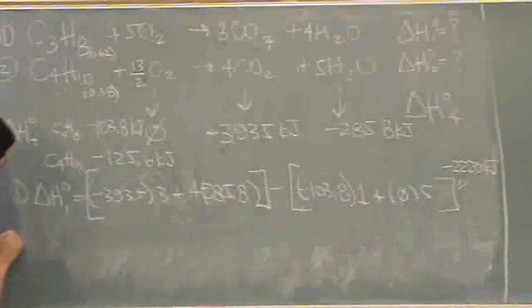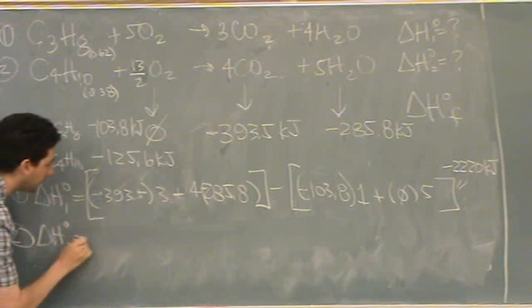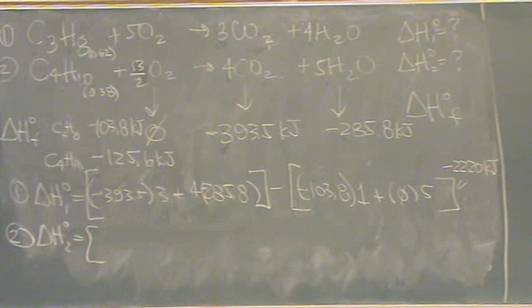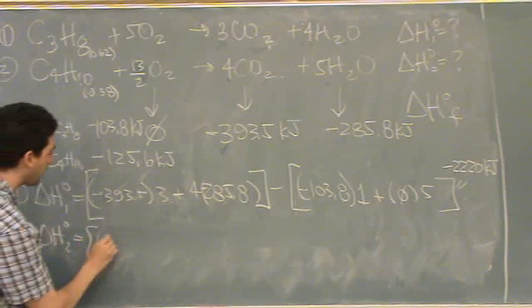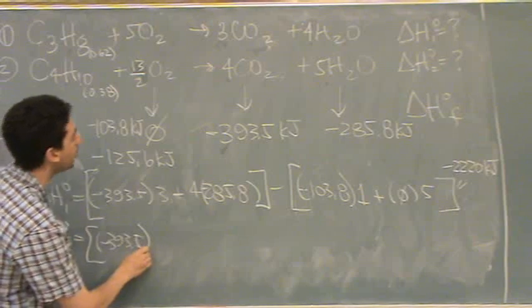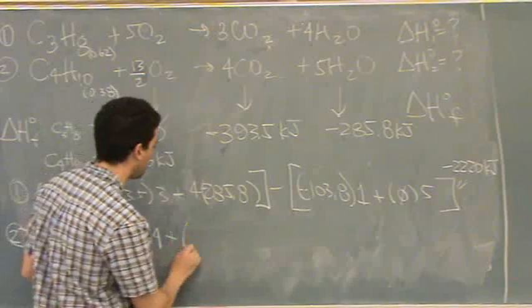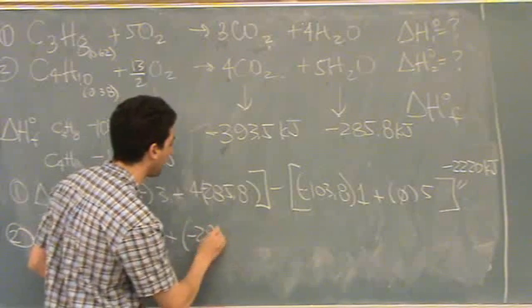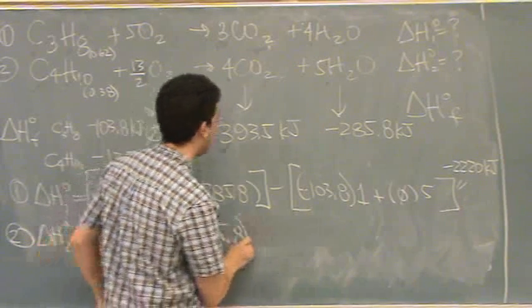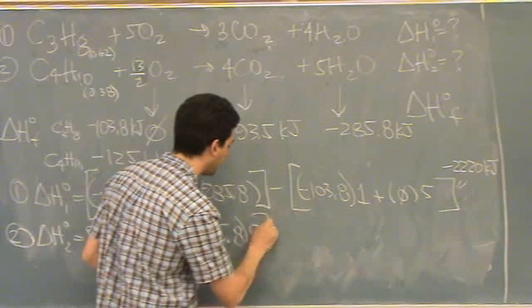The second reaction, same thing. Delta H2 standard equals, open brackets, products. It's going to look pretty similar. CO2, minus 393.5. And there's four of them in the second reaction. And then, there's H2O is minus 285.8. And there's five of them. And close brackets.